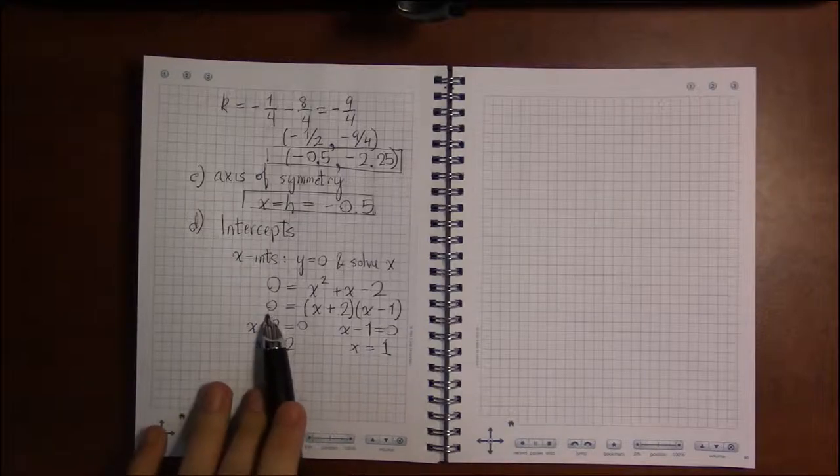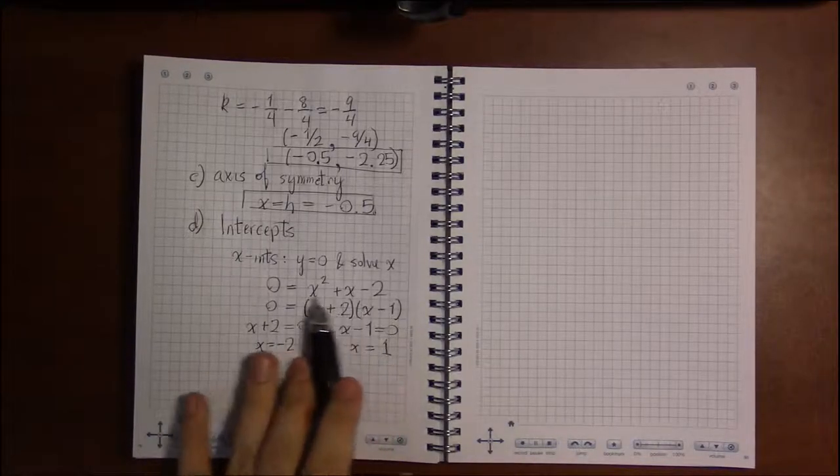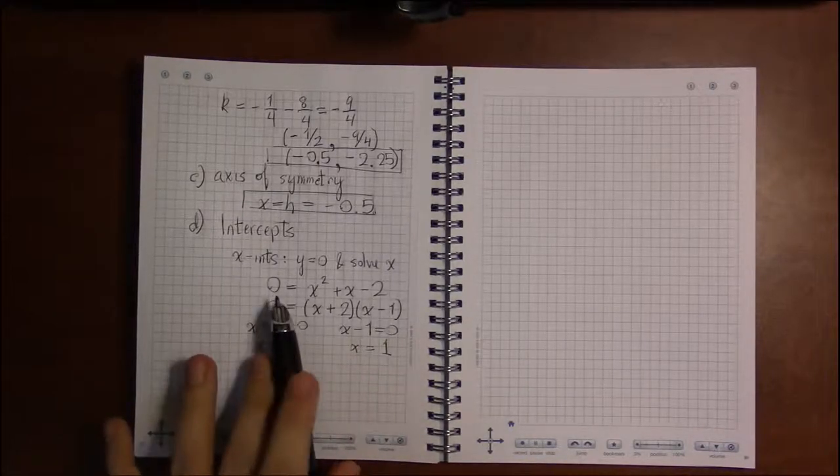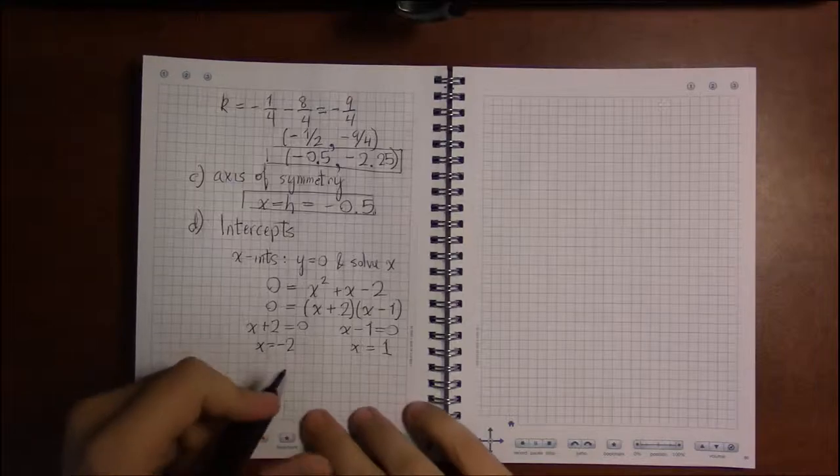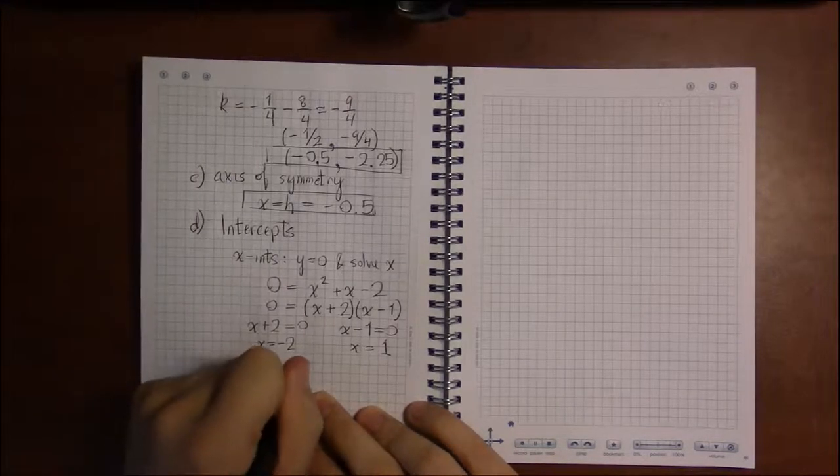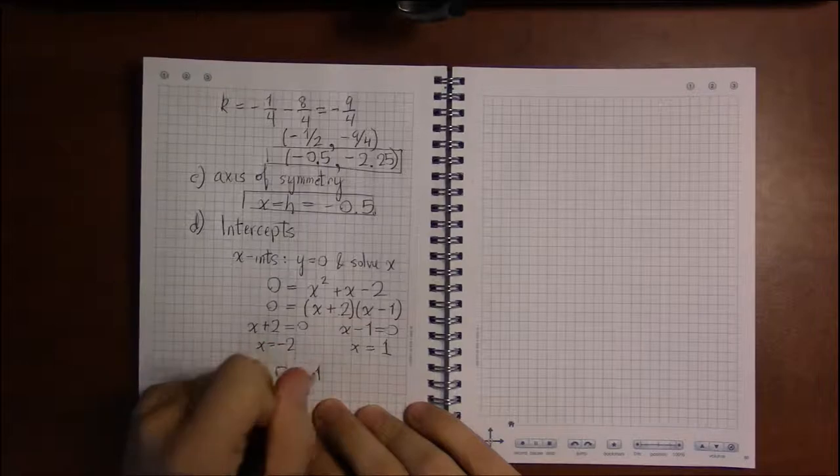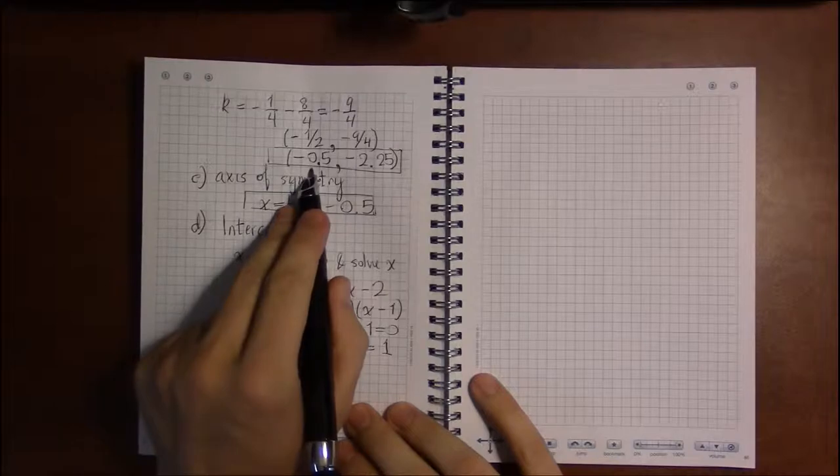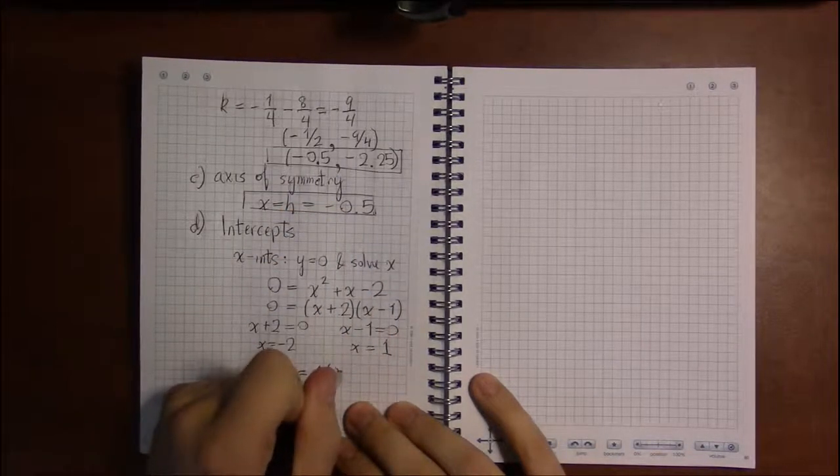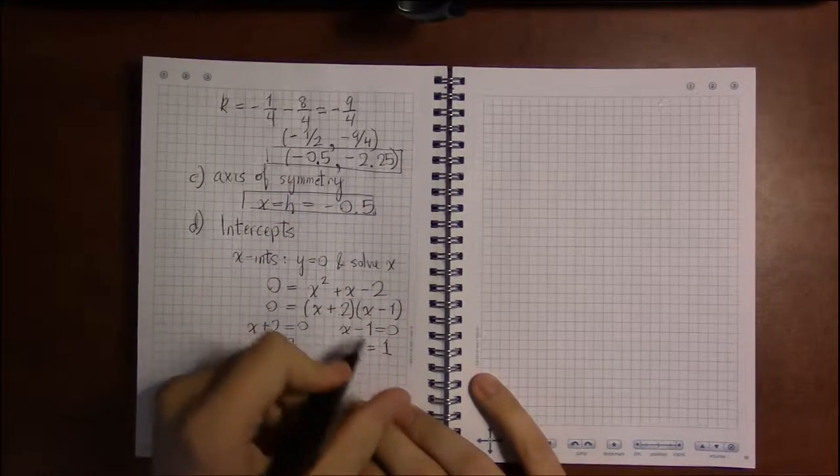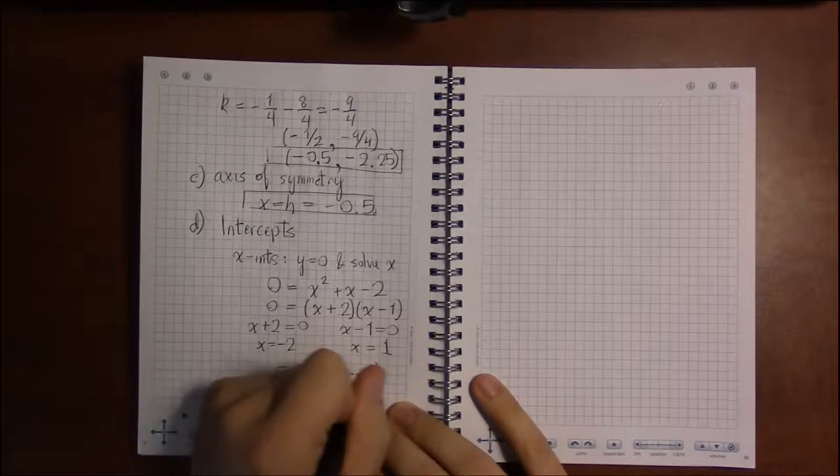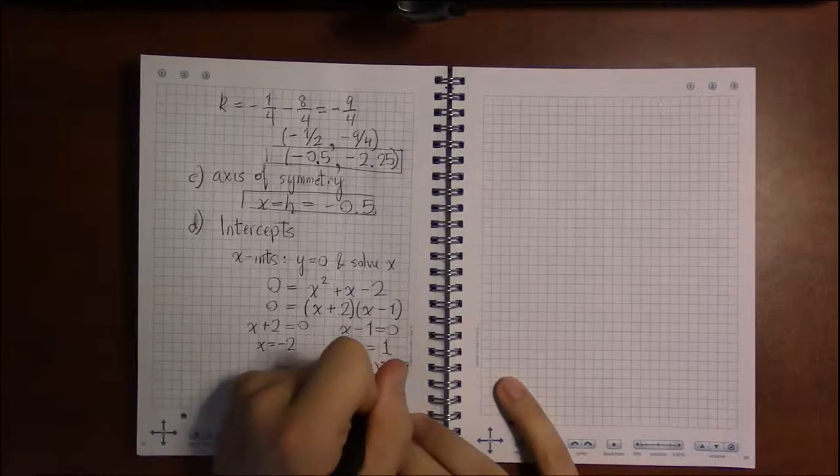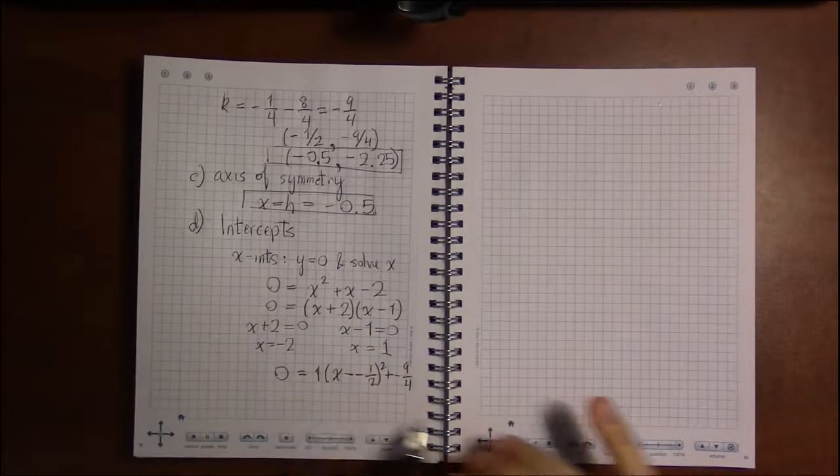So rather than being clever and factoring, I'm going to assume we don't see that this factors. The way to do this is not with the standard form. The way you want to do this is with the vertex form. We know what a is. a was 1. And we know what h and k are. h is minus 1 half. And k is minus 9 over 4. Sorry, I prefer fractions.